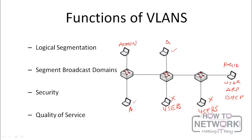Another function of VLANs is quality of service. Quality of service is when you try to determine the kind of service that different profiles of devices on a network will have. For instance, if we have phones connected on this network on their own VLAN, we know that voice traffic is very sensitive to speed. So we can increase the quality of service for phones by giving them priority to be sent across the network before data traffic. One of the ways to do that is by using VLANs to differentiate between data and voice traffic. If they were all on the same broadcast domain, it would be really difficult to perform quality of service for one set of traffic.